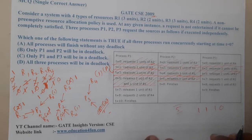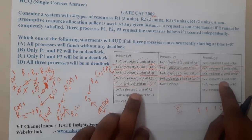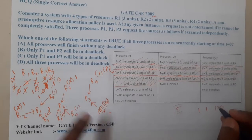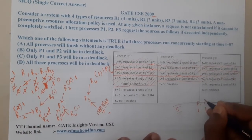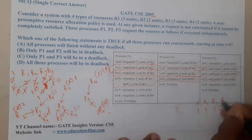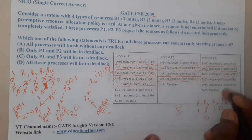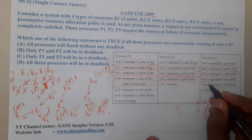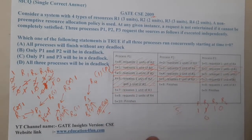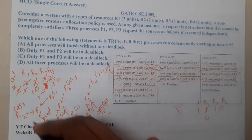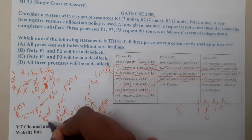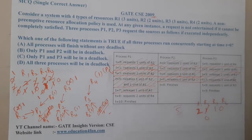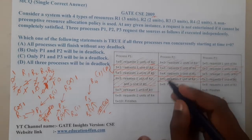At time t7, P2 requests 1 unit of R2 — we have 1 unit available, so it is allocated. Then P2 releases 1 unit of R1, giving us 2 units of R1 in total. This step is also done.